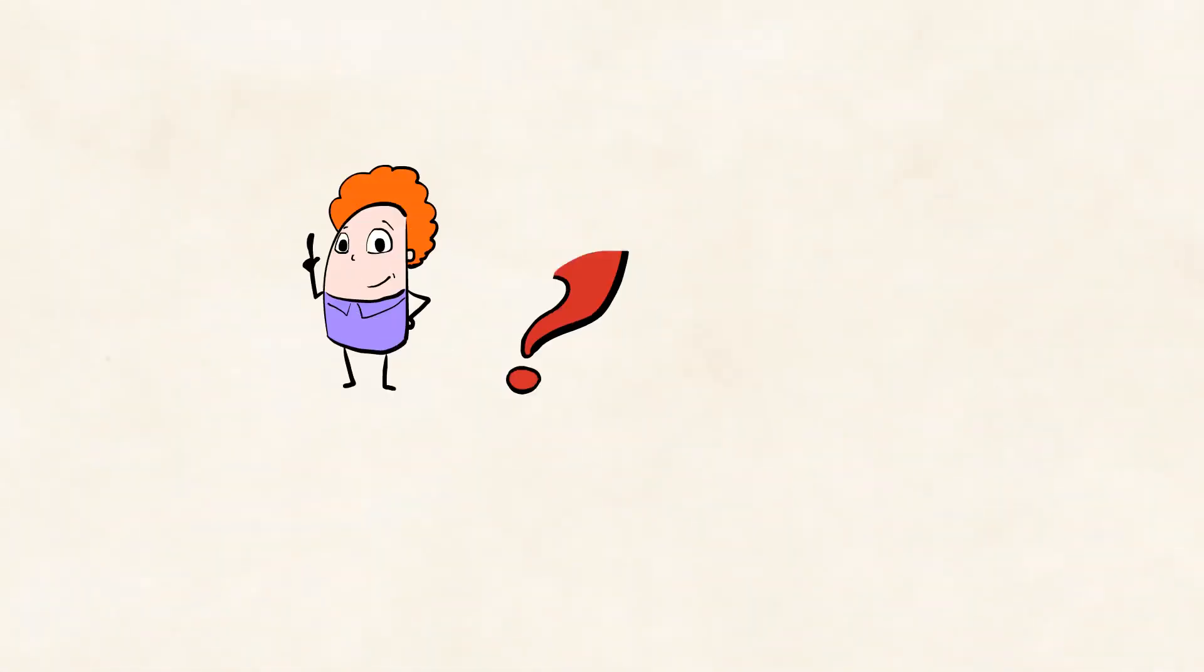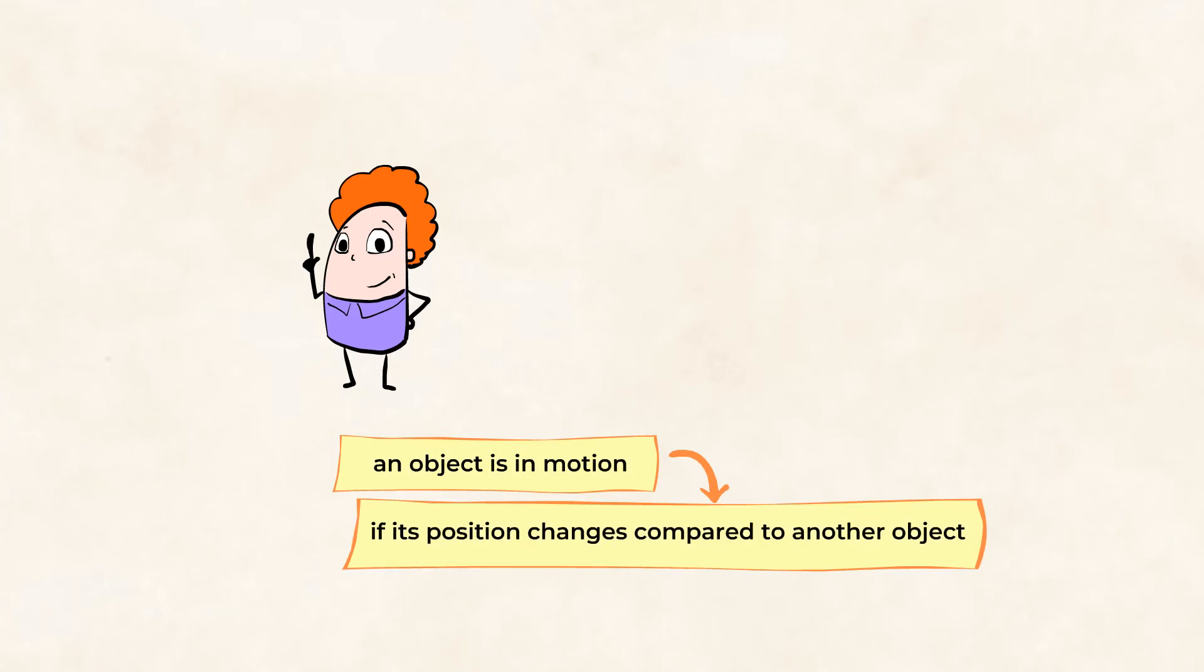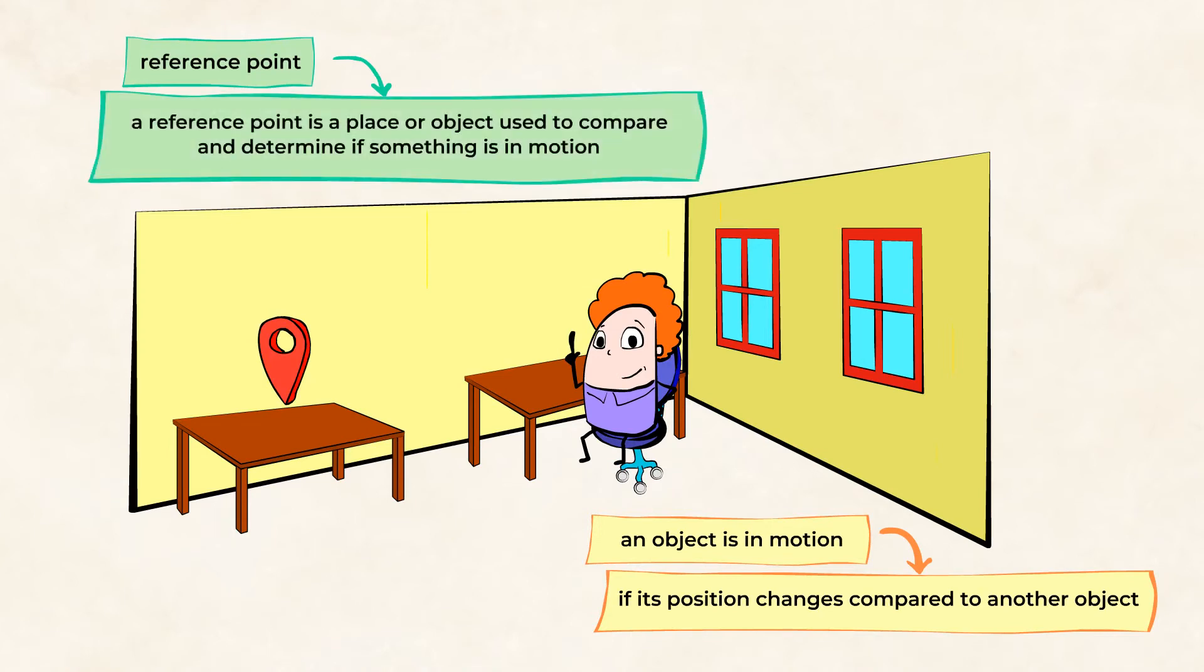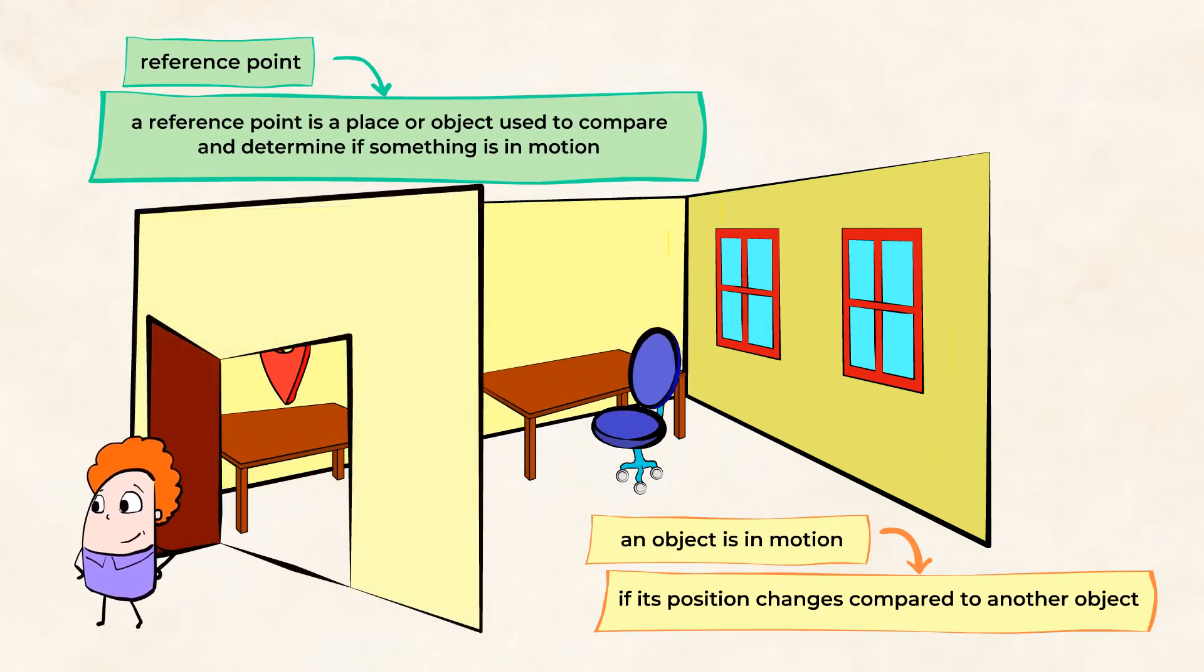The way we know an object is in motion is by seeing if the position changes compared to another object. Imagine you're in a room with a desk. To figure out if you're moving, you can use the desk next to you as a reference point. A reference point is a place or object used to compare and determine if something's in motion. If you no longer see the desk next to you, that means you're moving away from it. But if you look and the desk hasn't moved, that means you're standing still and not moving.